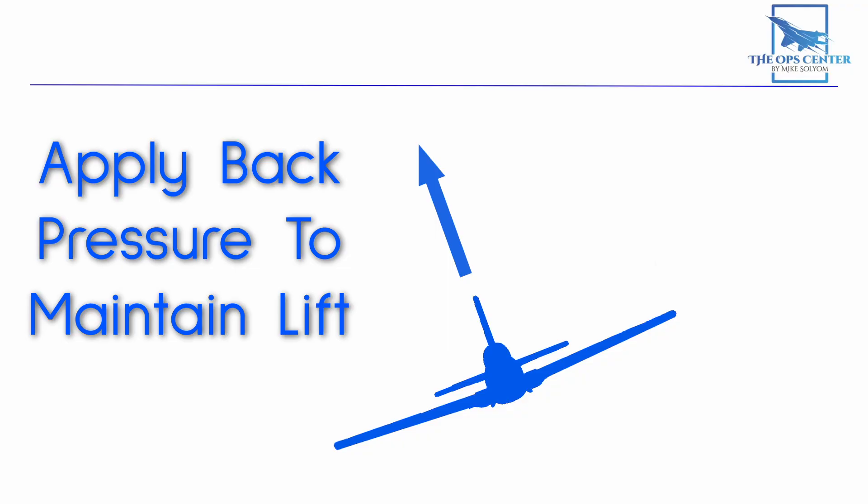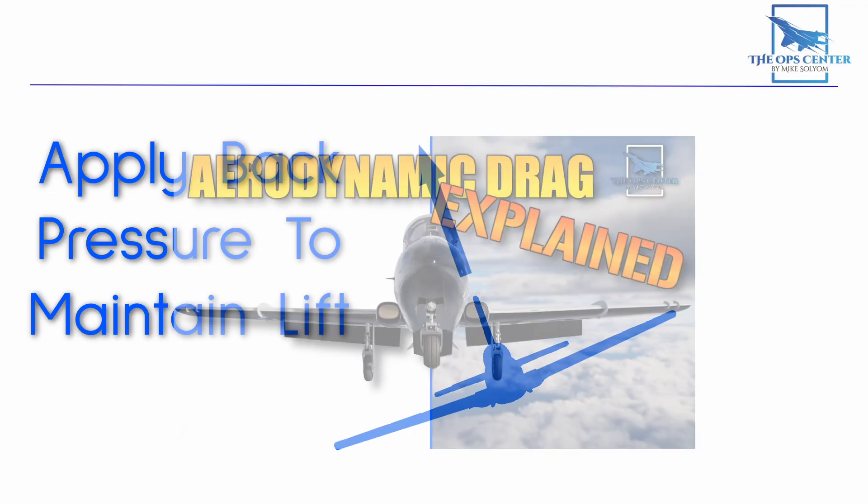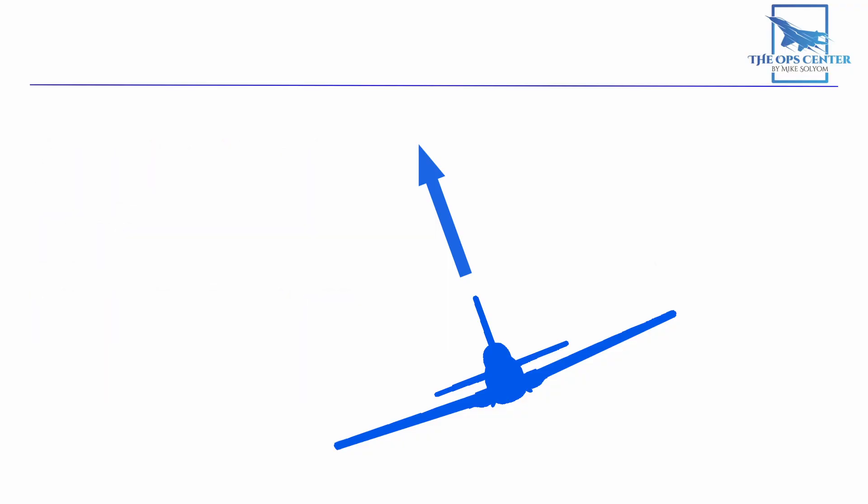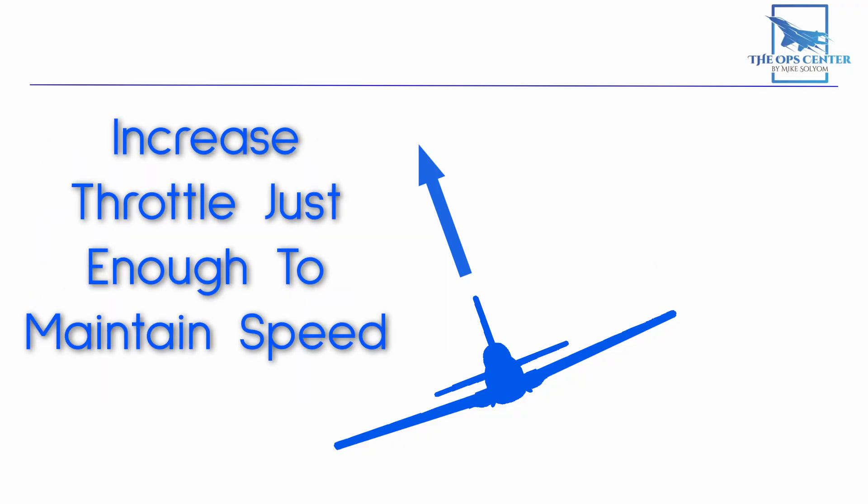But increasing angle of attack also causes induced drag, which we covered in this video. So now that you solved the problem of losing altitude, you have a different problem to deal with, losing airspeed to induced drag. You compensate for this by increasing throttle in a turn to keep the airspeed needle from moving.